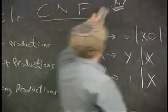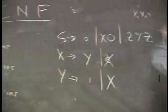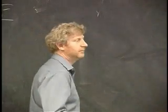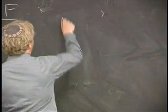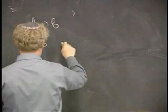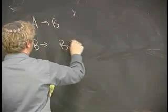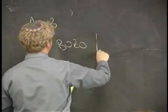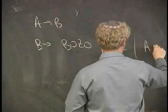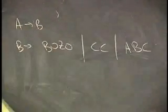And let's do the number two. And that'll finish the whole picture. Unit productions. Say you got A goes to B. And you got B goes to, I don't know, Bozo, CC, ABC, and I don't know, that's it.